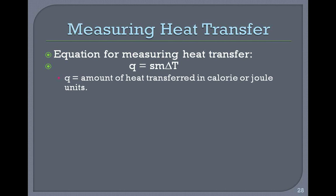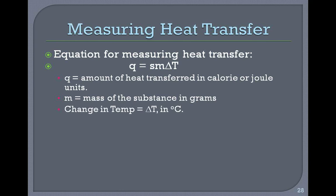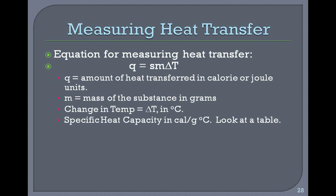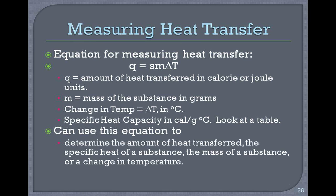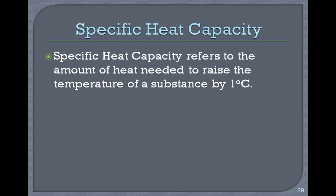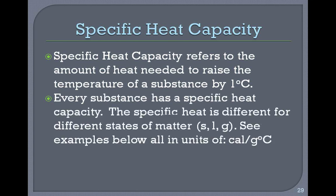Measuring heat transfer: the equation is Q = S·M·ΔT, called Q-SMAT. Q is the amount of heat transferred in calories or joules. M is the mass in grams. ΔT is the change in temperature in degrees Celsius. S is specific heat in calories per gram degrees Celsius, which you look up in a table. You can use this equation to determine the amount of heat transferred, the specific heat of a substance, the mass of a substance, or the change in temperature.